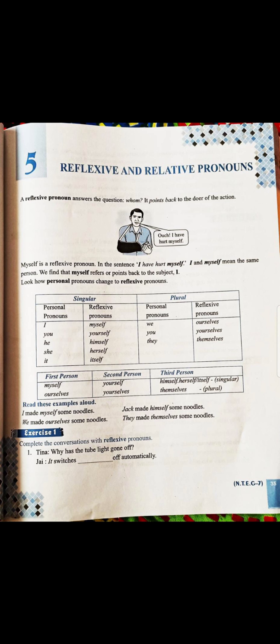In first person, we will get myself and ourselves. In second person, yourself and yourselves. Whereas in third person, himself, herself, itself in singular, whereas themselves in plural. Also, just look to the sentence. Some are written here. I made myself some noodles. I made myself. Here, I and myself both belong to the same person or point back to that same doer of the action.